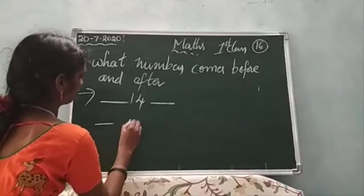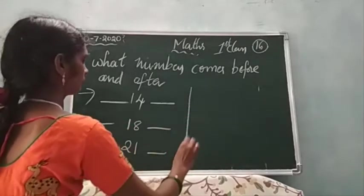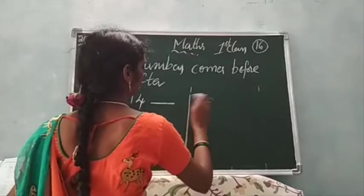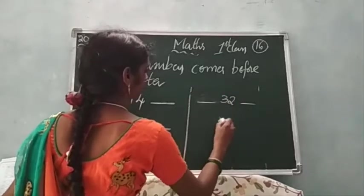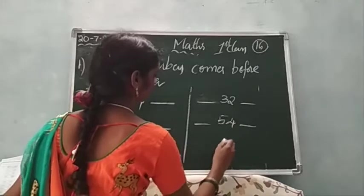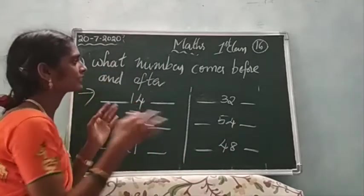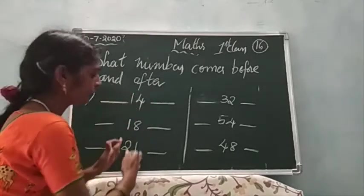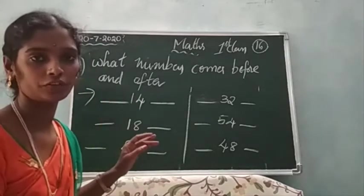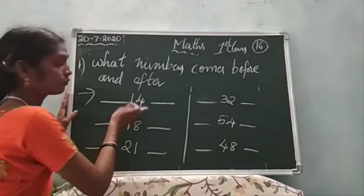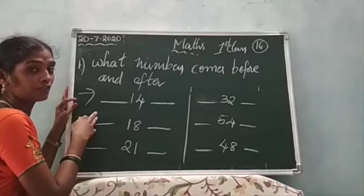First of all I will give you the between number, then you will write before the number and after the number. Okay students. For the number that comes before and after: I will give you only the between number, then you will write before and after. 14 is the between number — 14 before the number, which number?